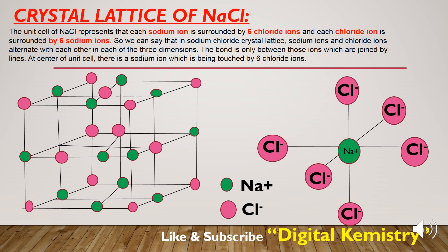The bond is only between those ions which are joined by lines. At the center of the unit cell, there is a sodium ion, as you can see in the diagram, which is being touched by six chloride ions.